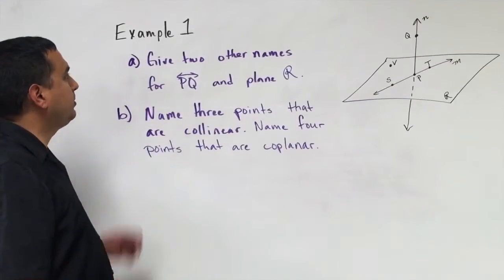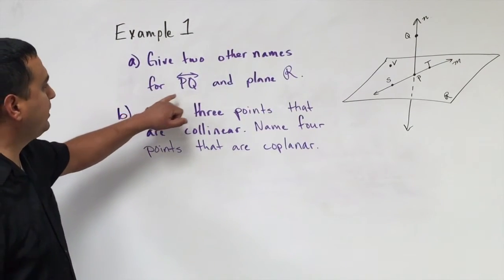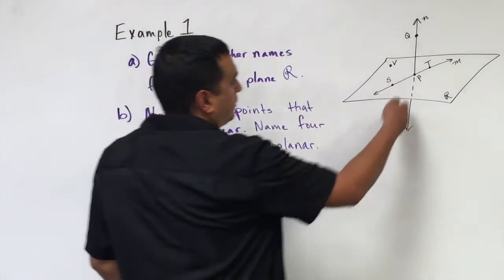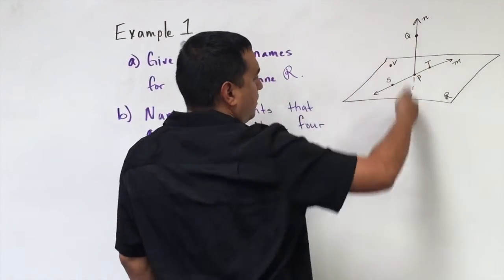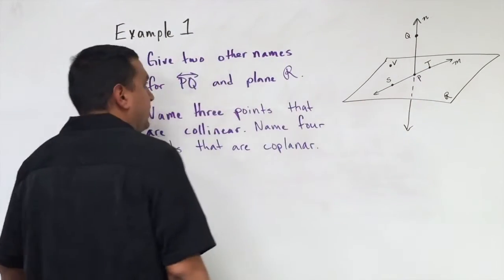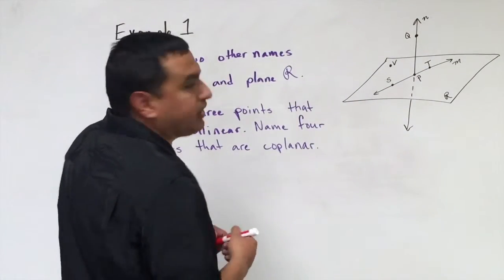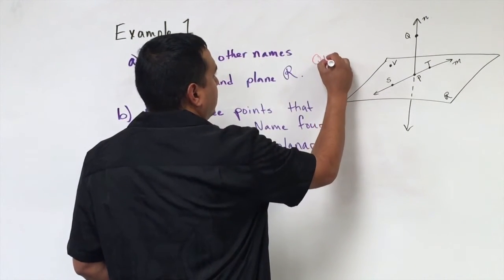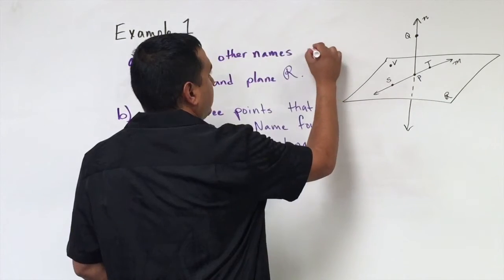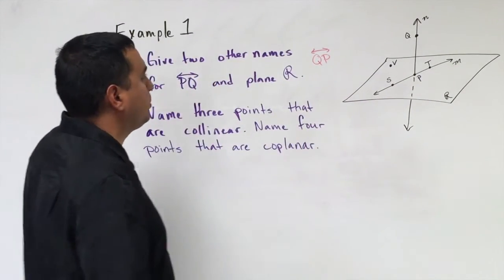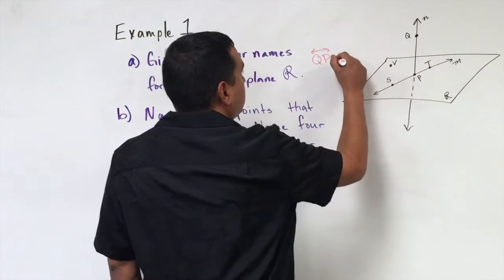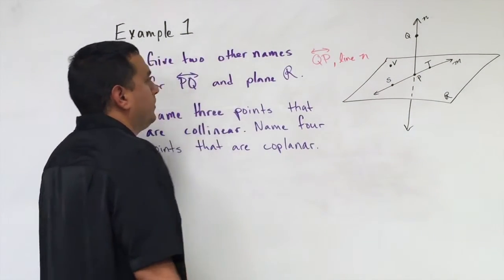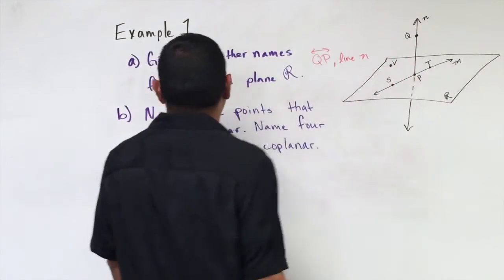This first example, it says, the first part says, give two other names for line PQ and plane R. So looking at this, here's P, here's Q, so this line is going straight up and down. The name for that one, or another name for line PQ, would be, if I just replace the letters and I did line QP, if I transpose them. But also we could call it line N, because it has that cursive script letter up there on top.